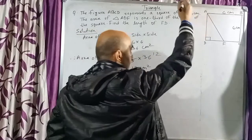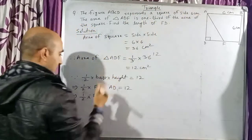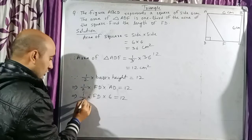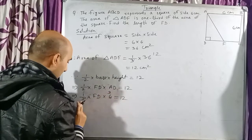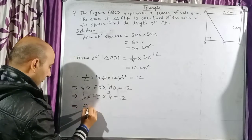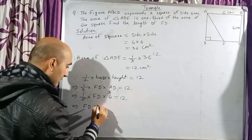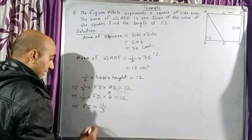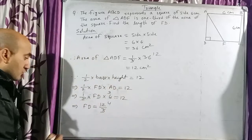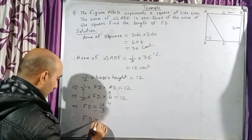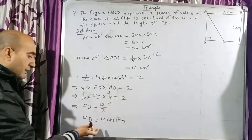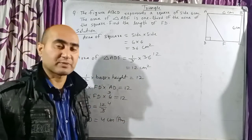AD is the side of the square, so AD equals 6. We write: half into FD into 6 equals 12. Cancelling 2 and 6 gives 3 in the denominator. So FD equals 12 divided by 3, which equals 4. Therefore, FD equals 4 cm.